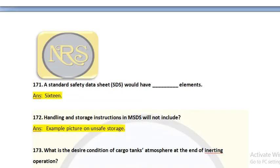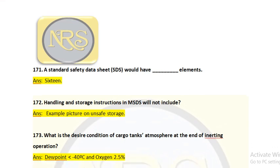Question number 171: A standard safety data sheet would have how many elements? Elements are the divisions or partitions of the data sheet. The answer is 16 elements.